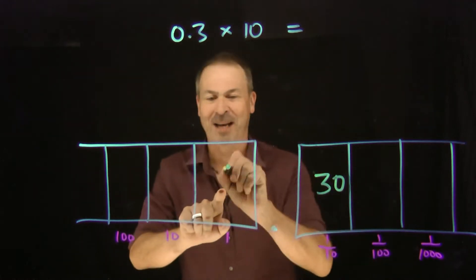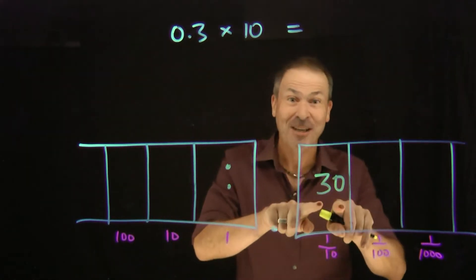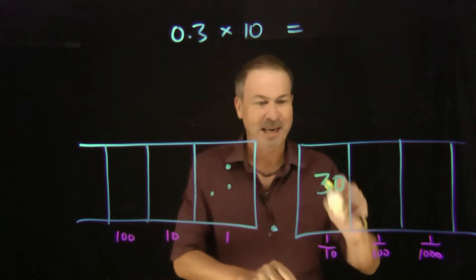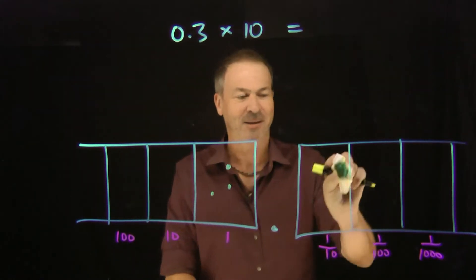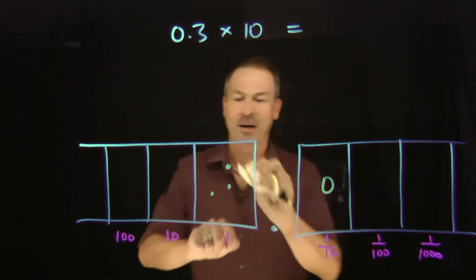10 would explode. Kaboom! Make a dot. Another 10 would explode. Kaboom! Make a dot. A third 10 would explode. Kaboom! Make a dot. Leaving nothing behind here. So 0 left behind here, but I've created 3 dots there.